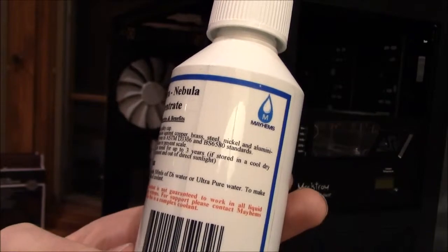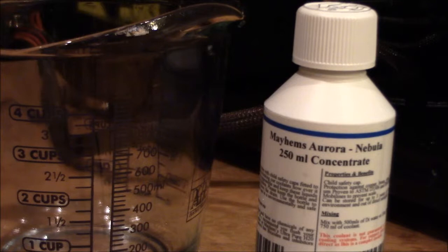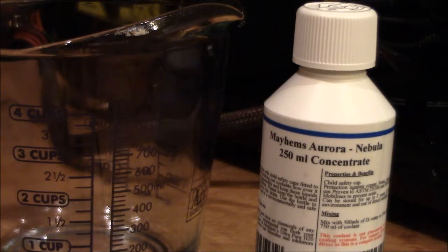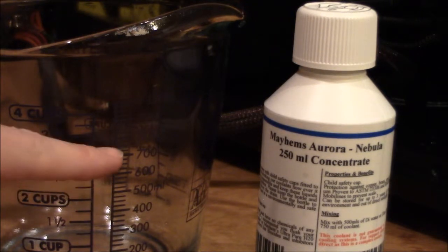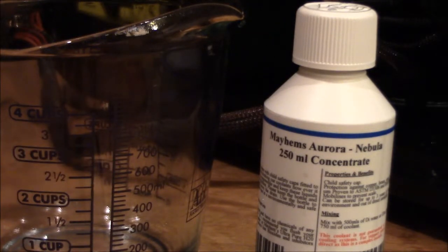So I'm going to be mixing this coolant now. It says to make 750 milliliters - that's the goal. There's three hash marks between 700 and 800, so that second one, the middle one, is the 750 milliliter mark.